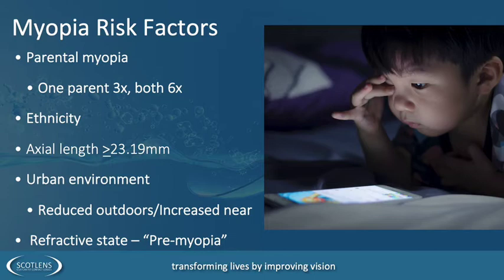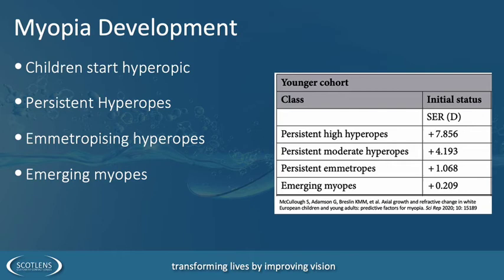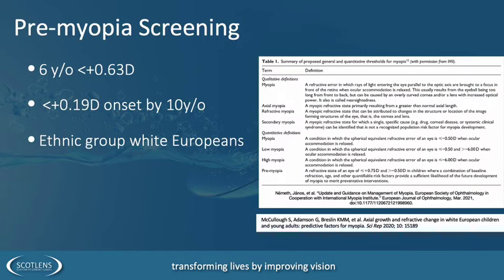This has led to the term pre-myopia. Children are generally born hypermetropic, then either remain hypermetropic, become emmetropic, or become myopic if they don't have enough hypermetropia. At six years of age, if we have 0.63 dioptres of hypermetropia or more, the child is less likely to become myopic; below 0.63 and the chances are they will. At 10 years of age the threshold is 0.19 dioptres. This study was from white Europeans, so it doesn't carry the age-bias of Eastern Asian cultures where myopia tends to start earlier, but it is relevant for UK practice.